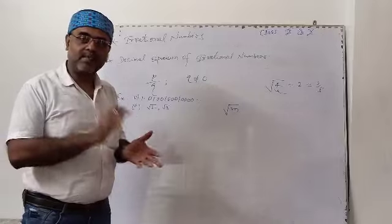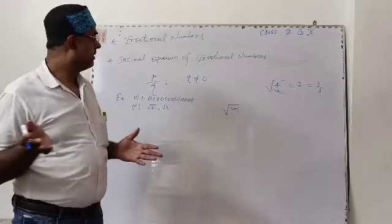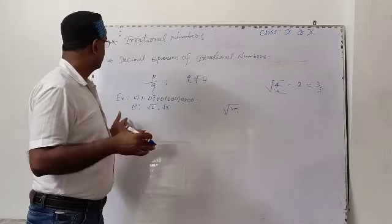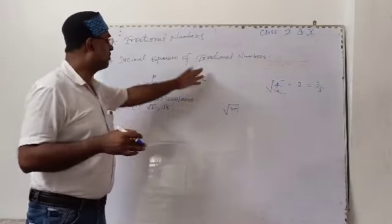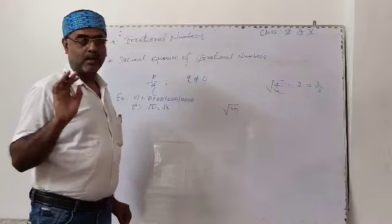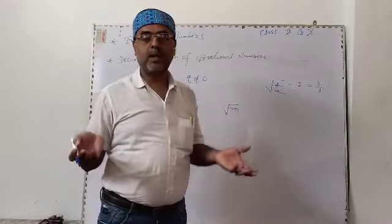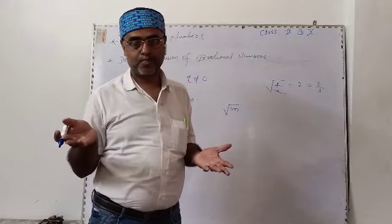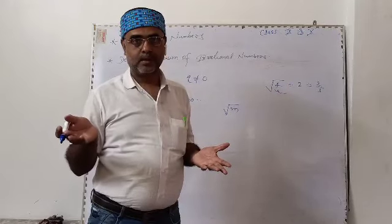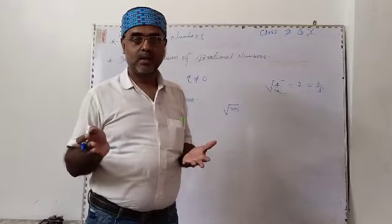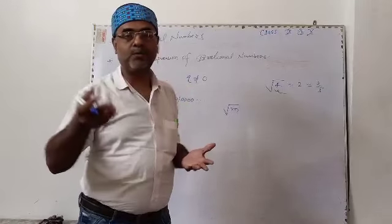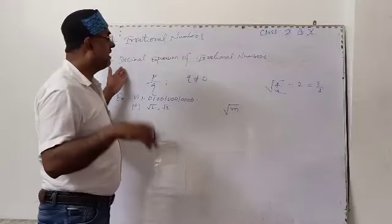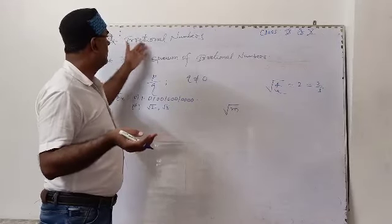Now you can easily understand the difference between rational and irrational numbers. You have also understood the decimal expansion definitions for rational and irrational numbers. We have already discussed real numbers with respect to both rational and irrational numbers, and at this point we have covered the relevant aspects of irrational numbers.